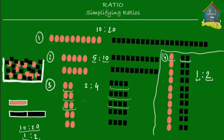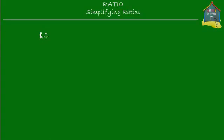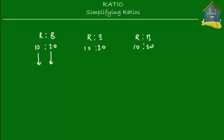So what is the quickest way of simplifying ratios? Mia had red stickers to black stickers in the ratio 10 to 20. She arranged them in three different ways. First, in two rows — she had five red stickers for every 10 black stickers, giving a ratio of 5 to 10.